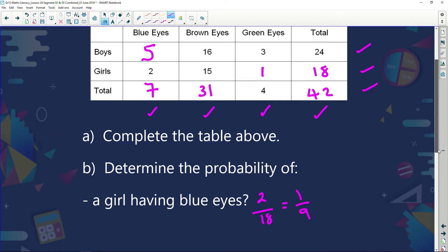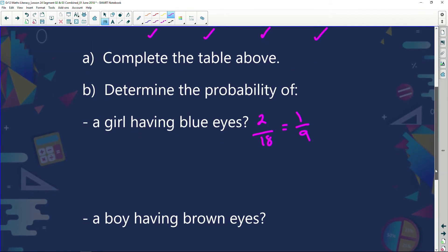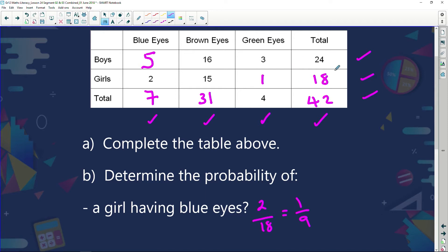Next question. What is the probability of a boy having brown eyes? How many boys were there? There were 24 boys. How many had brown eyes? 16 had brown eyes. Let's simplify that. Put it in your calculator. Push 16 over 24 and it will give you 2 over 3. So it means for every 3 boys, 2 of them will have brown eyes. Statistically. Doesn't necessarily mean that's 100% true. But based on our facts we can say, you know what? There's 2 in 3 chances of a boy having brown eyes at our school.